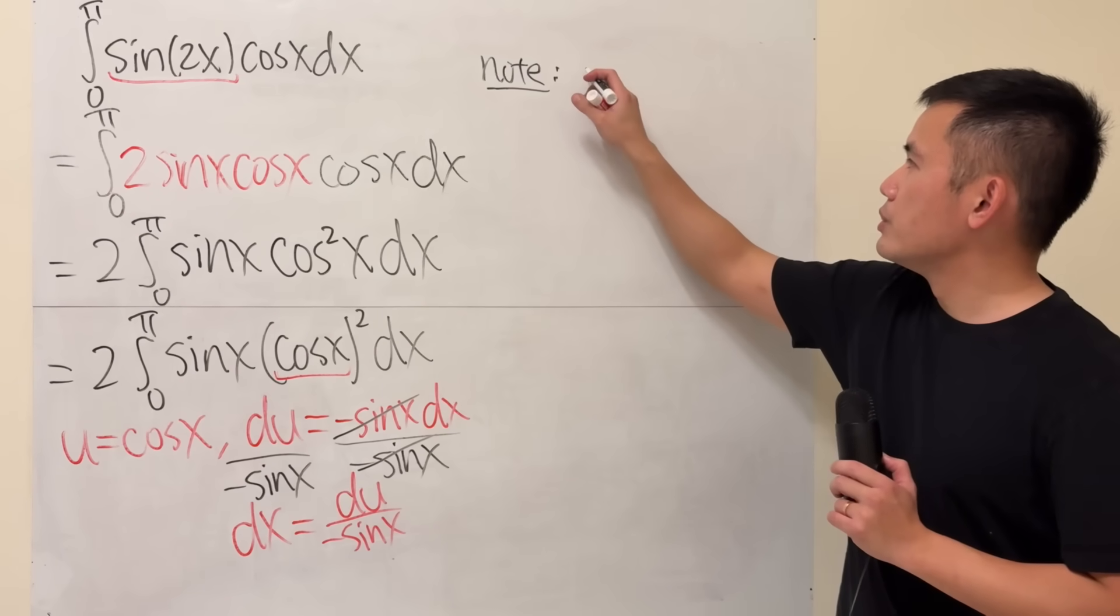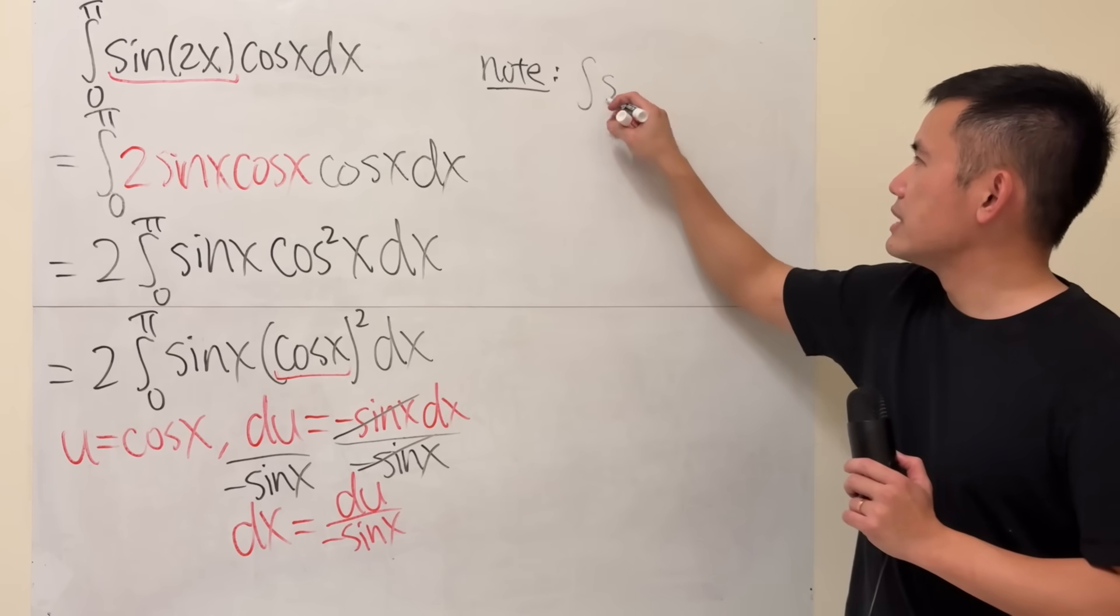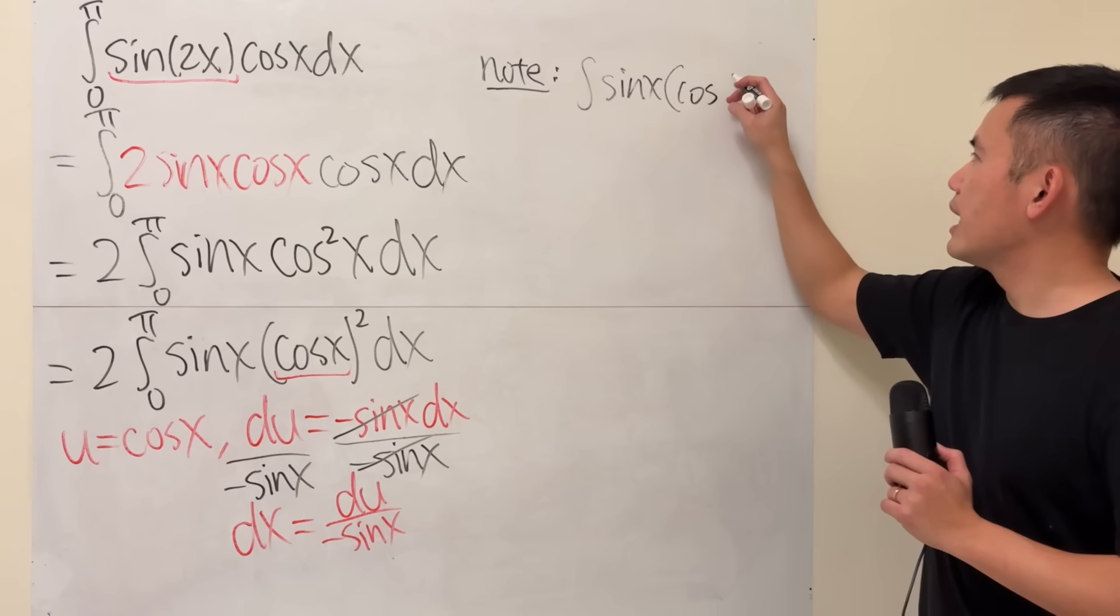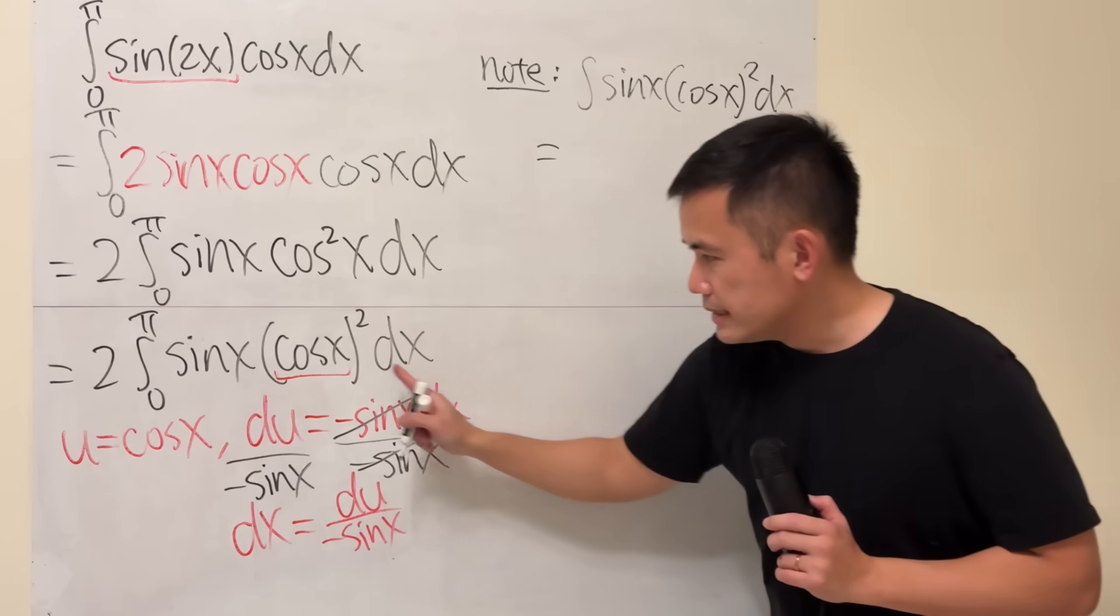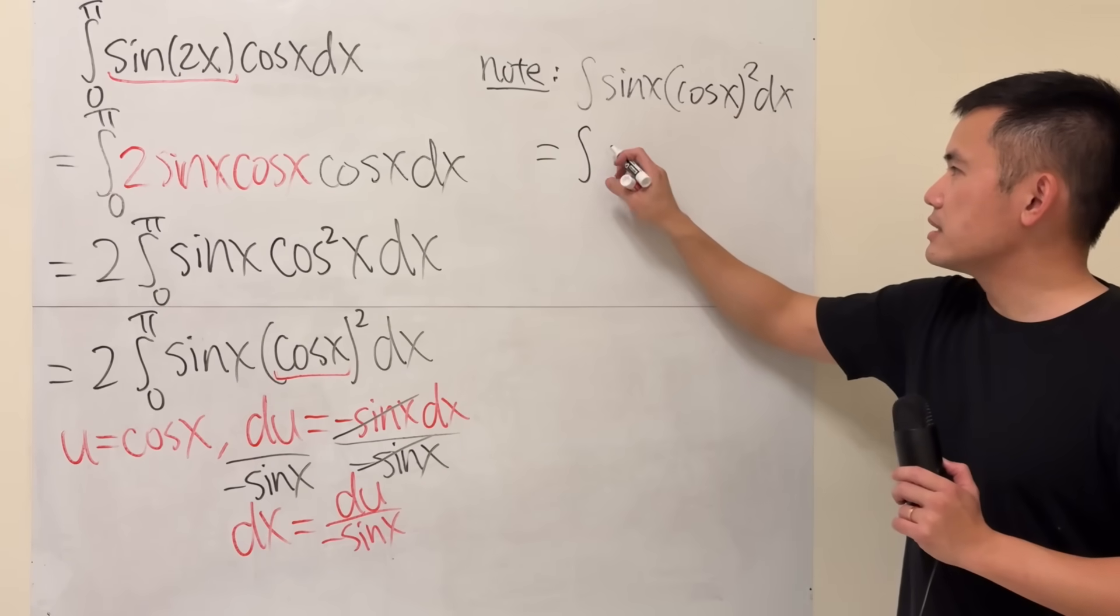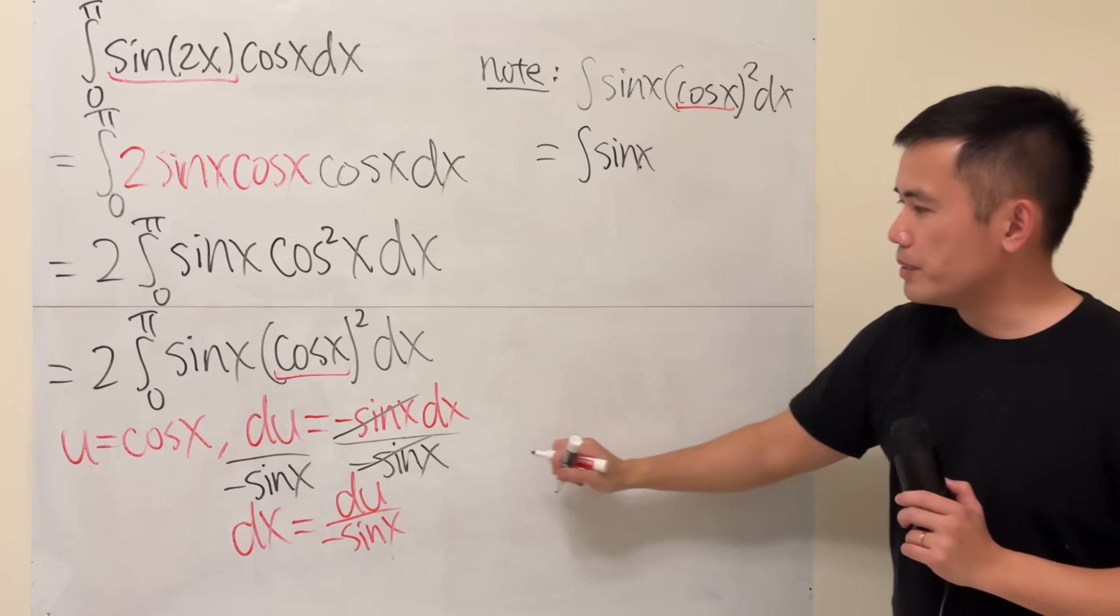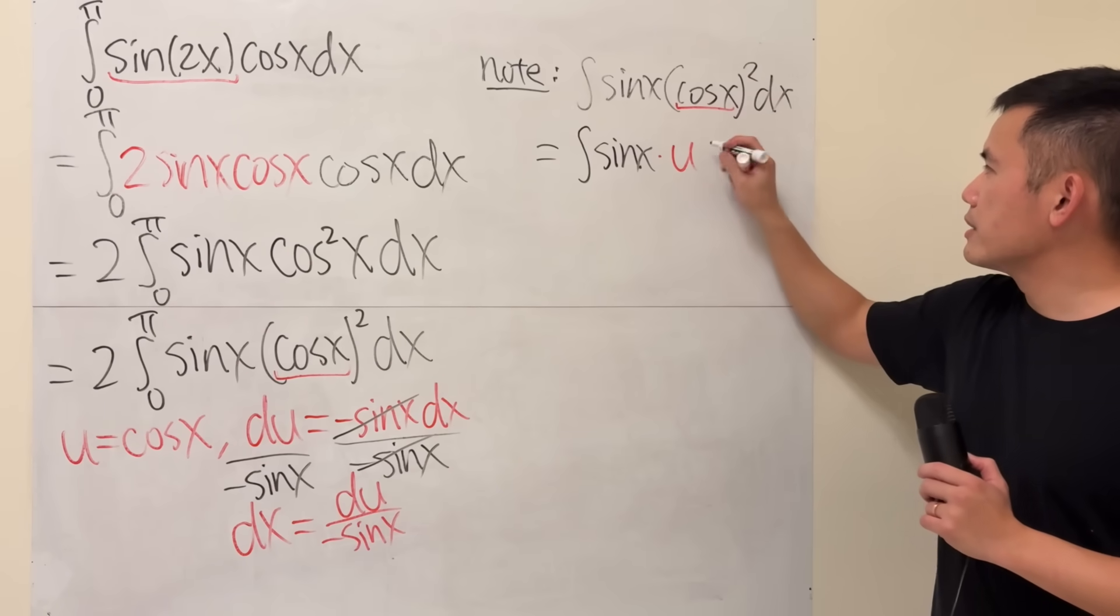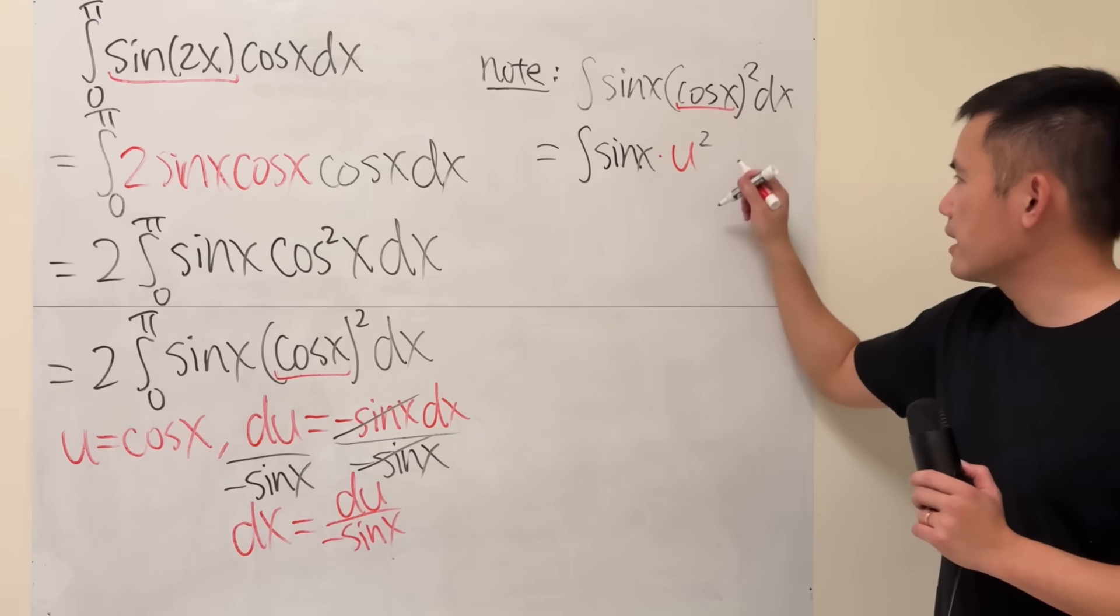So this is just 2 and then... Actually I'm just going to do the integral sine x and then cosine x squared dx. With these right here, I'm going to go to the u world. Sine x stays for now, but this right here is what we set to be the u. So we have u squared.